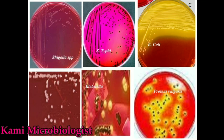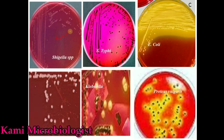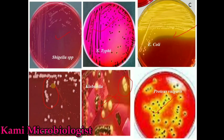Let me show all these bacterial colonies through a diagram. As you can see, these are the colonies of Salmonella and Shigella — Salmonella Typhimurium showing black colonies. E. coli has yellow colonies, Proteus has yellow colonies with black centers, Klebsiella pneumoniae has mucoid colonies, and Pseudomonas shows a pinkish colony. That's all about the XLD media. I hope you guys get an idea about that. Thanks for watching.